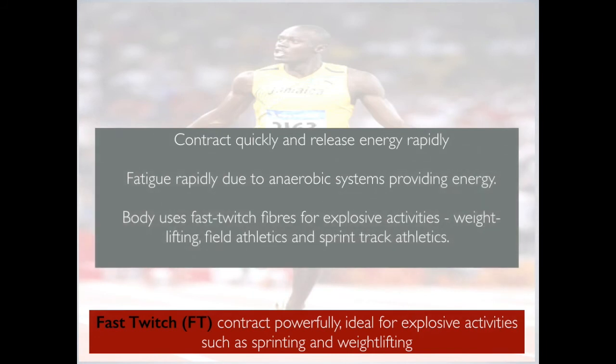Fast-twitch fibres contract powerfully and are ideal for explosive activities such as sprinting and weightlifting. They contract very quickly and release energy rapidly — think of the ATP-PC system for a sprinter. These muscle fibres contract rapidly and use the ATP-PC system very well, but they fatigue very quickly and run out of energy rapidly due to the anaerobic systems providing energy. The body uses fast-twitch fibres for explosive activities: weightlifting, field athletics, and sprint athletics.